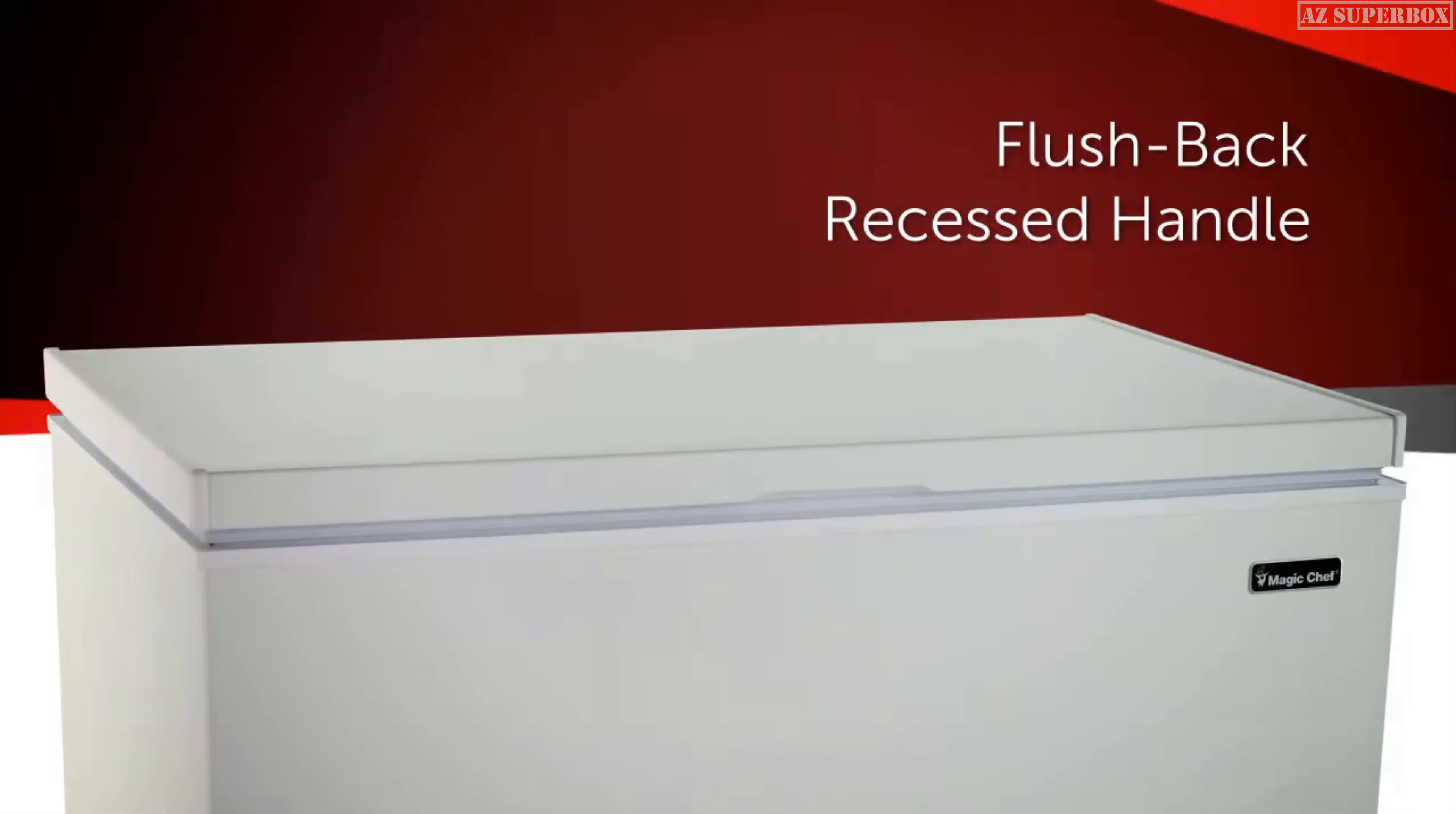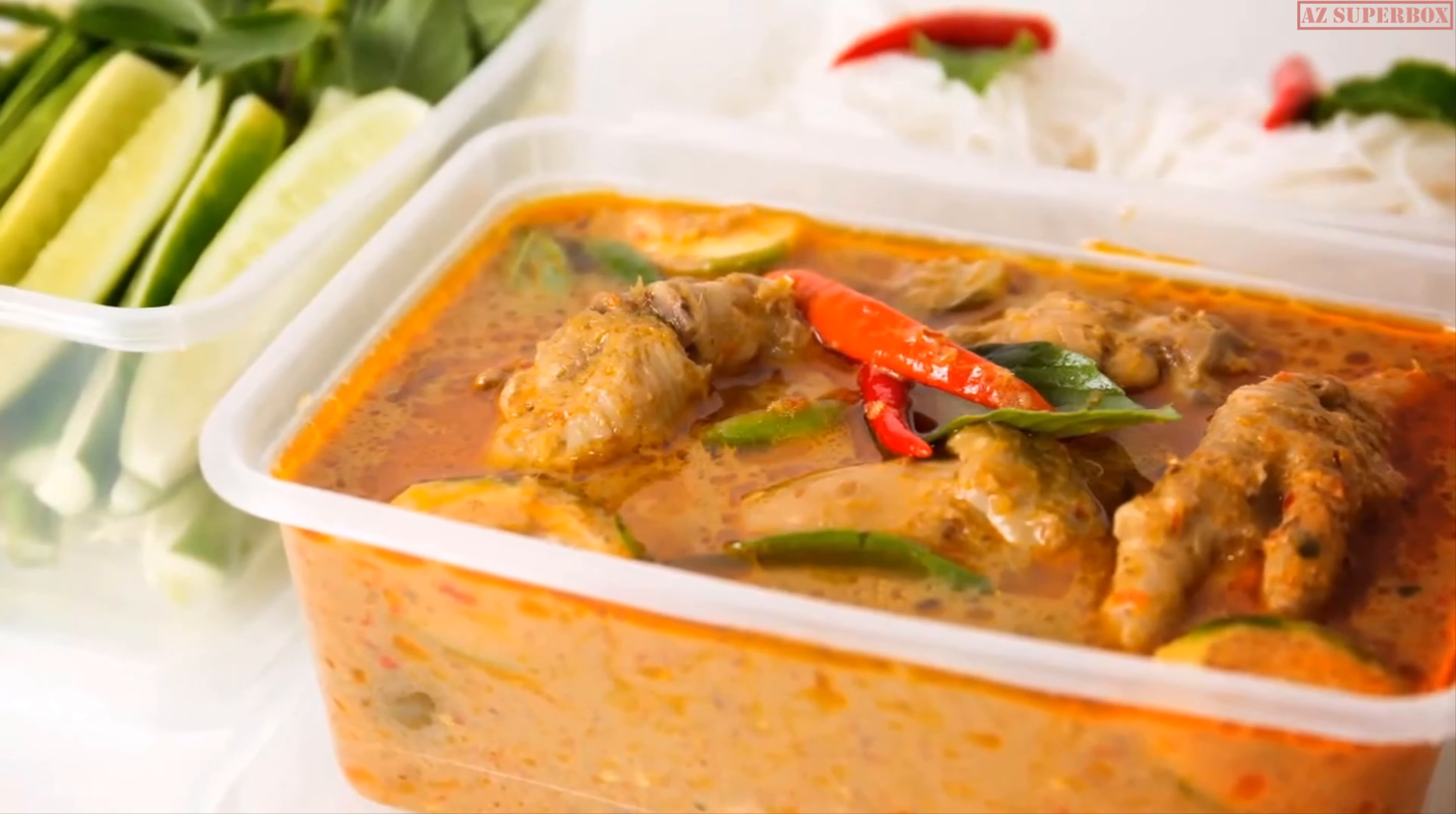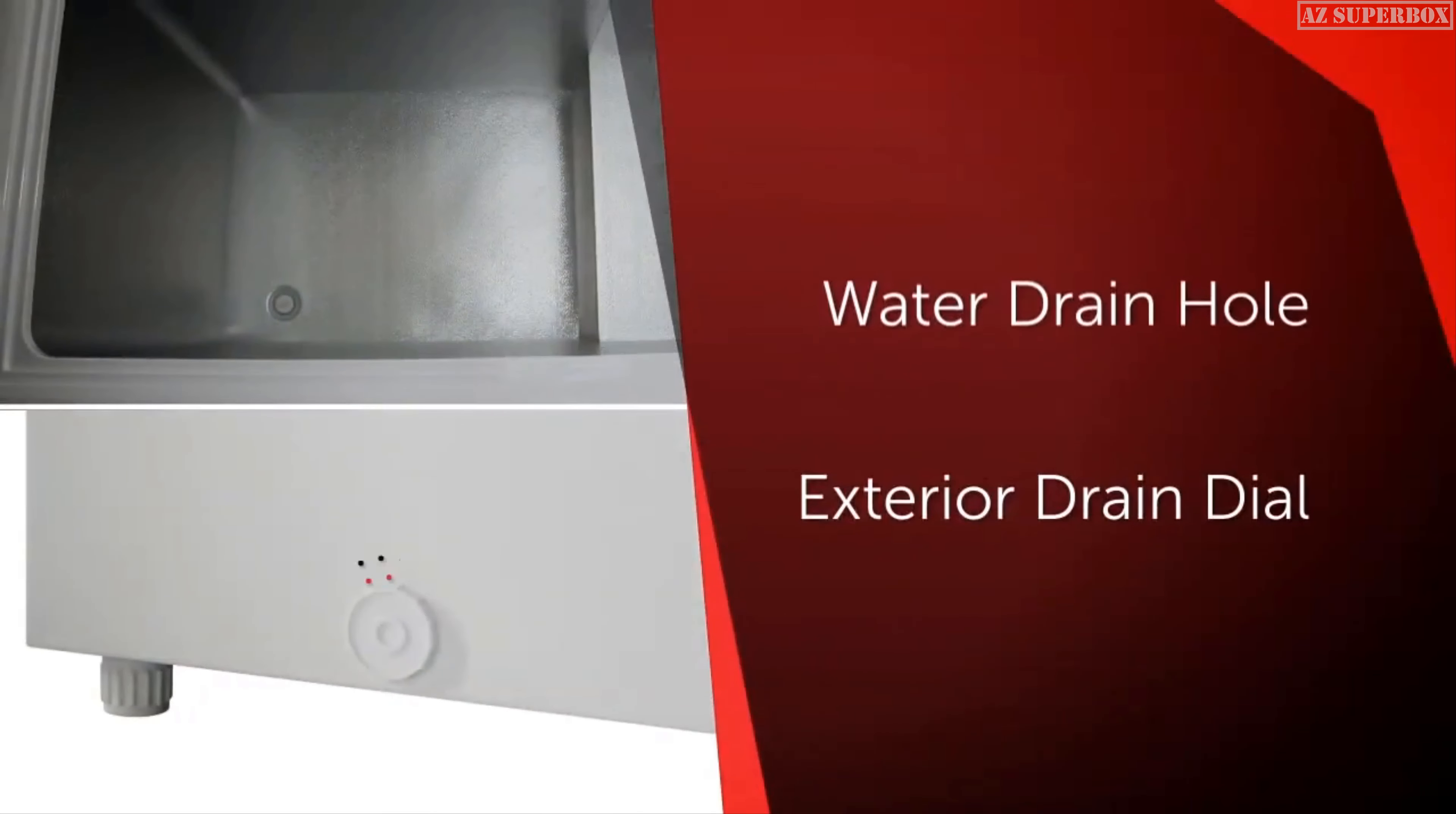The Magic Chef 6.9 cubic foot compact chest freezer is the perfect solution when that extra valuable freezer space is needed. A flush back and recessed handle create a space saving design, making it the perfect addition for basements, rec rooms and small space living. While the interior is spacious enough to accommodate a variety of items from homemade meals and leftovers to spare ice and all of your favorite items.